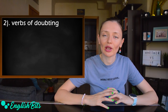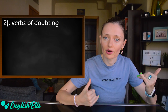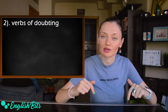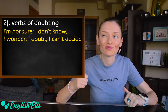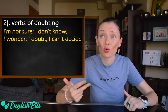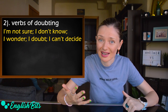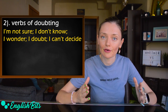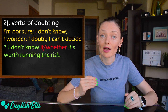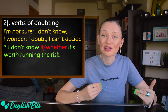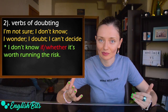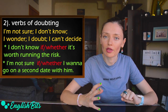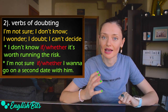Number two, we can use 'if' or 'whether' after verbs of doubting — after expressions like 'I'm not sure', 'I don't know', 'I wonder', 'I doubt', 'I can't decide'. We can use either 'whether' or 'if'. First example: 'I don't know if or whether it's worth running the risk.' And one more example: 'I'm not sure if or whether I want to go on a second date with him.'